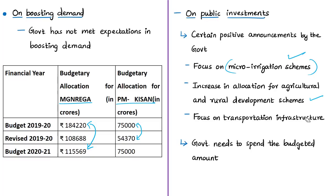The author also appreciates the Rs. 1.7 lakh crore allocation for transportation infrastructure, but cautions the government against underspending as it is doing in the current financial year. While huge public investments have been committed, private investment is also necessary. The author suggests that public funding should be utilized for ongoing projects rather than new ones, or spent on small irrigation and rural road projects which are easier to complete and deliver benefits to multiple sectors, ultimately increasing demand.